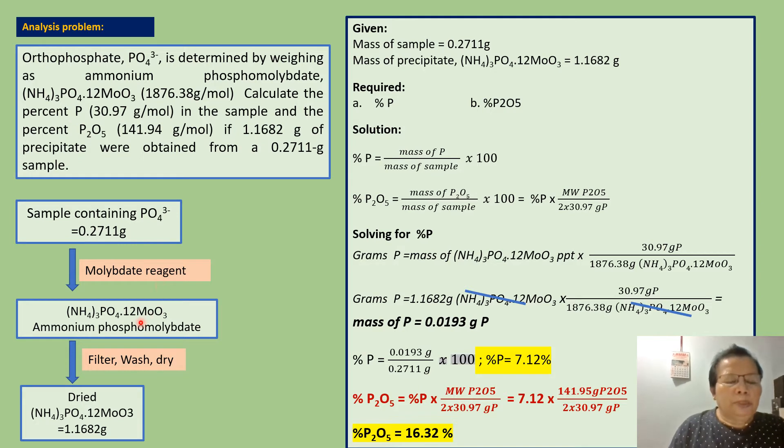When precipitation is complete, the solution is filtered to separate this ammonium phosphomolybdate precipitate from the filtrate. Then we wash thoroughly with distilled water to completely eliminate all water-soluble substances that co-precipitate with our analyte.